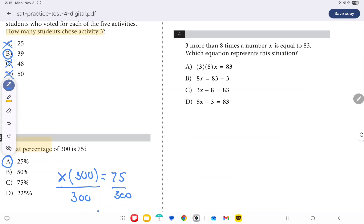And the last question for this video, we're going to look at question number four. And question number four says, three more than eight times the number X is equal to 83. Which equation represents this situation?